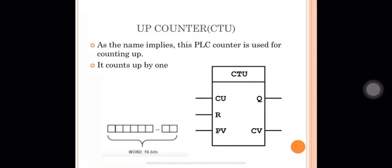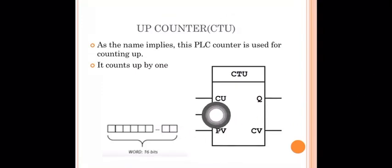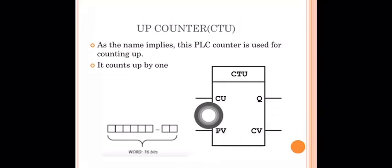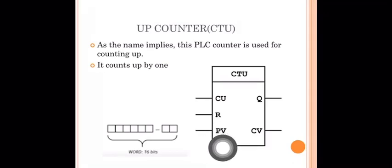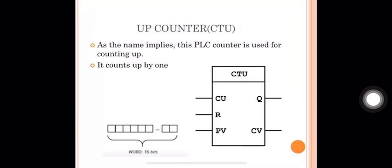This is the up counter function block. It has a CU input, an output Q, a reset input R, a preset value PV, and a current counter value CV.